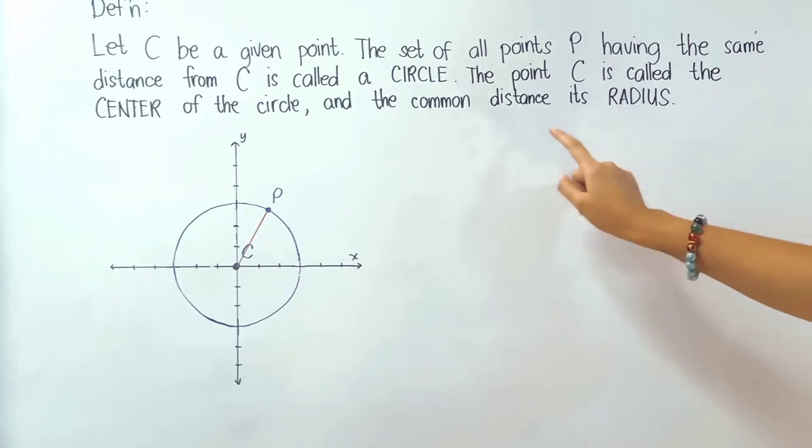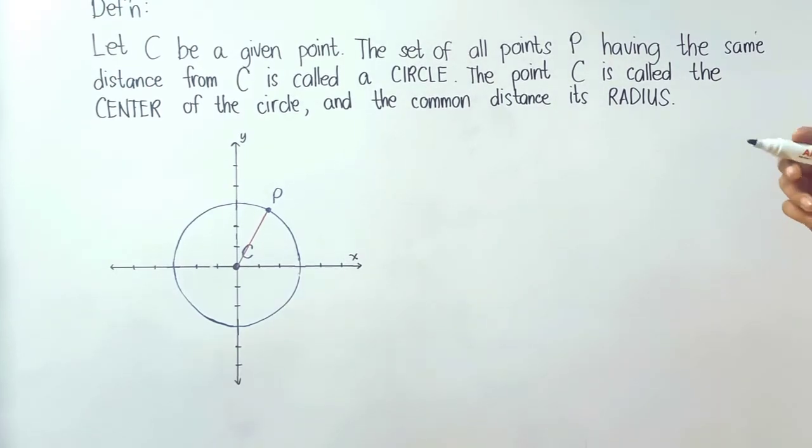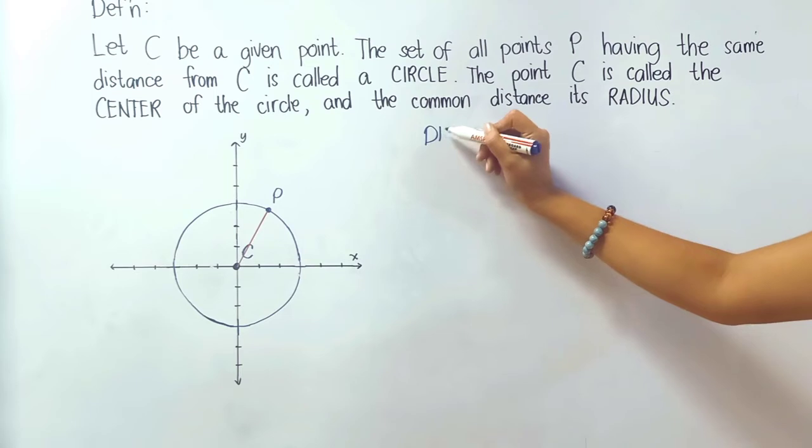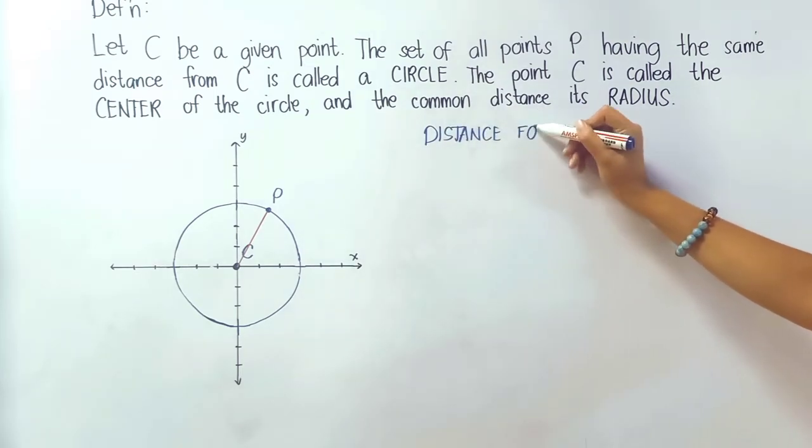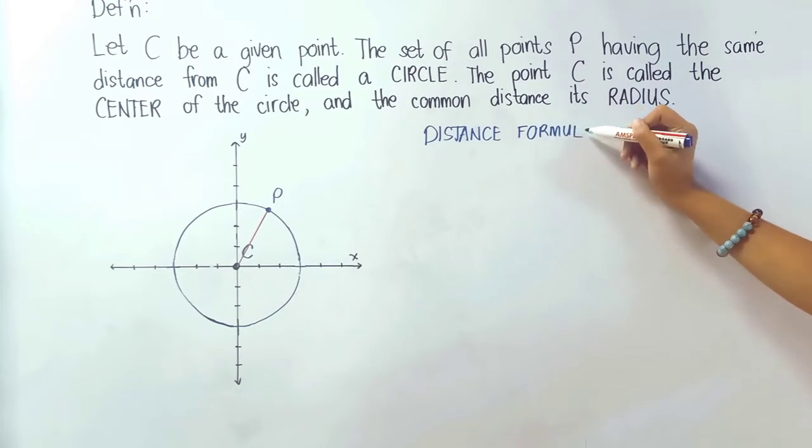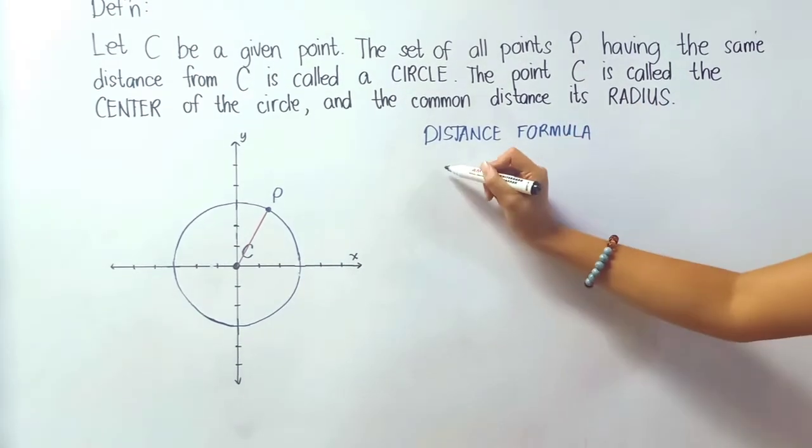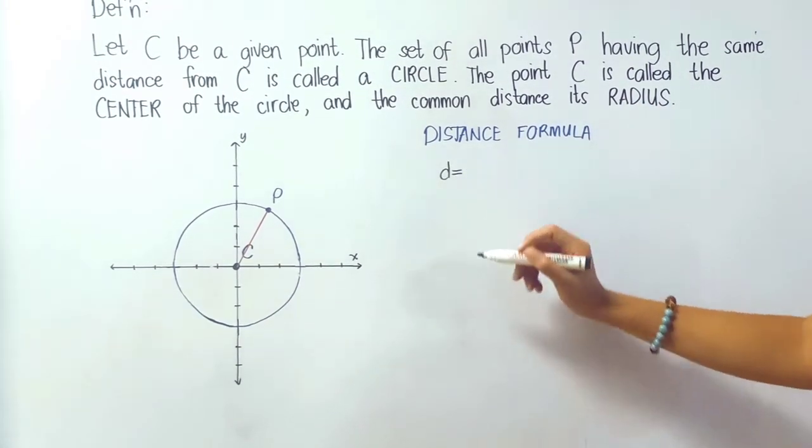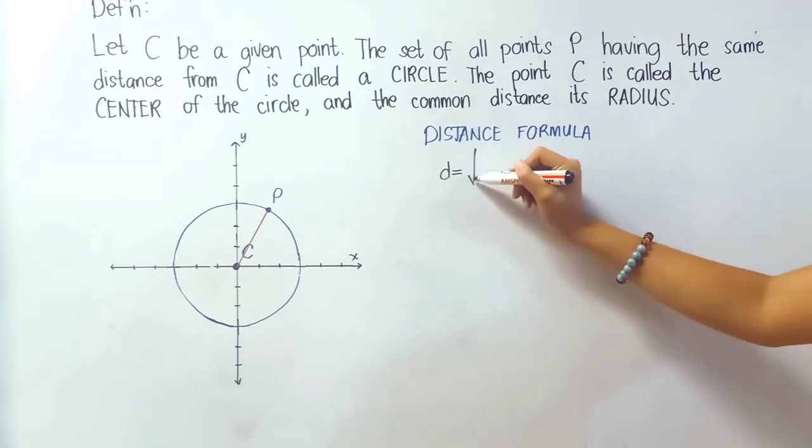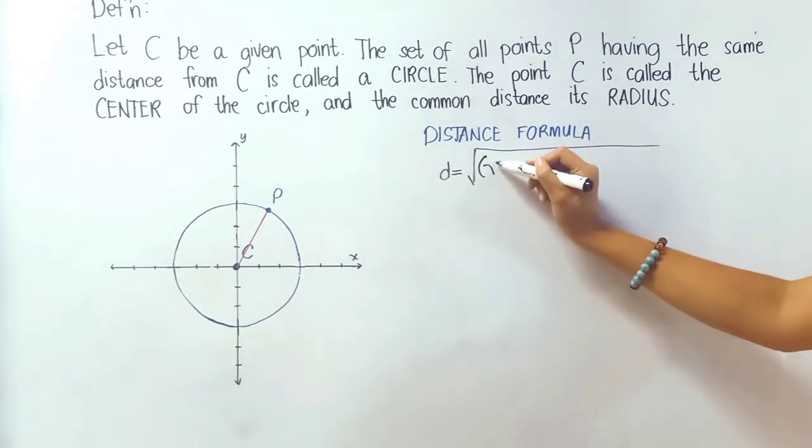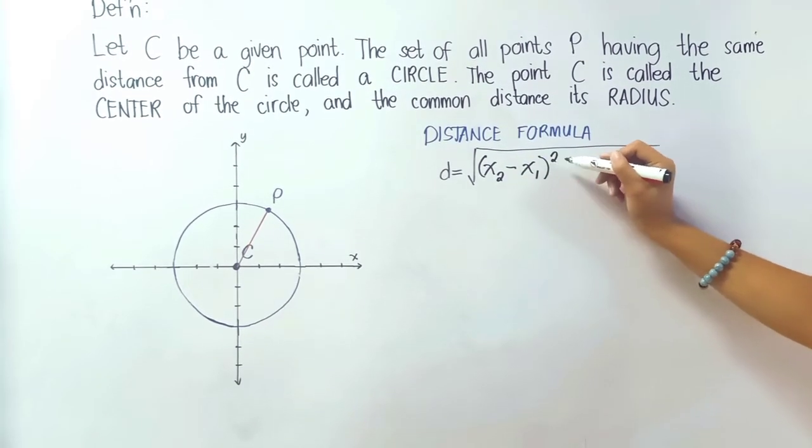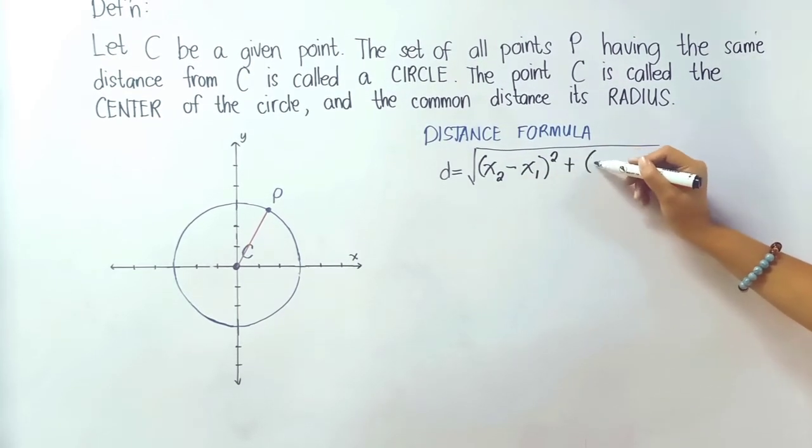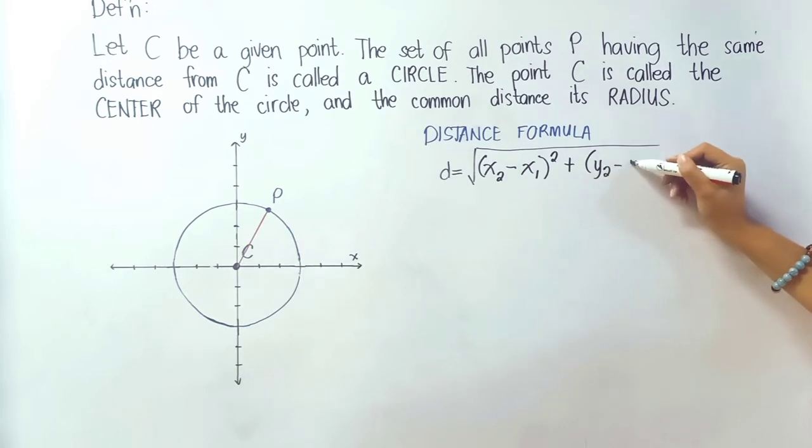Getting the radius of the circle will lead us to the standard equation of the circle using the distance formula. The distance formula is equals to the square root of quantity x sub 2 minus x sub 1 raised to 2 plus quantity y sub 2 minus y sub 1 raised to 2.